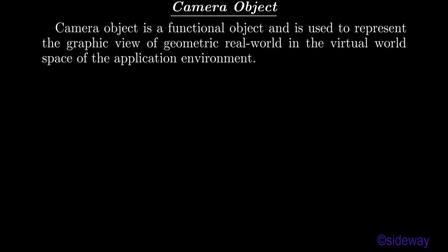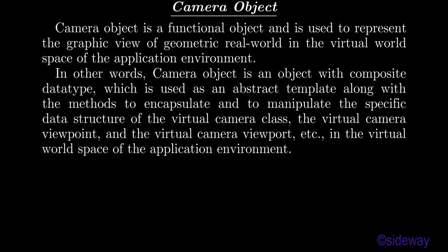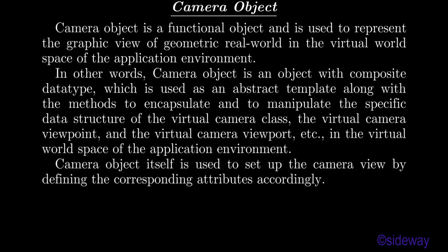Camera object is a functional object used to represent the graphic view of the geometric real world in the virtual world space of the application environment. In other words, camera object is an object with composite data type, used as an abstract template along with the methods to encapsulate and manipulate the specific data structure of the virtual camera class, virtual camera viewpoint, and virtual camera viewport, etc. Camera object itself is used to set up the camera view by defining the corresponding attributes accordingly.